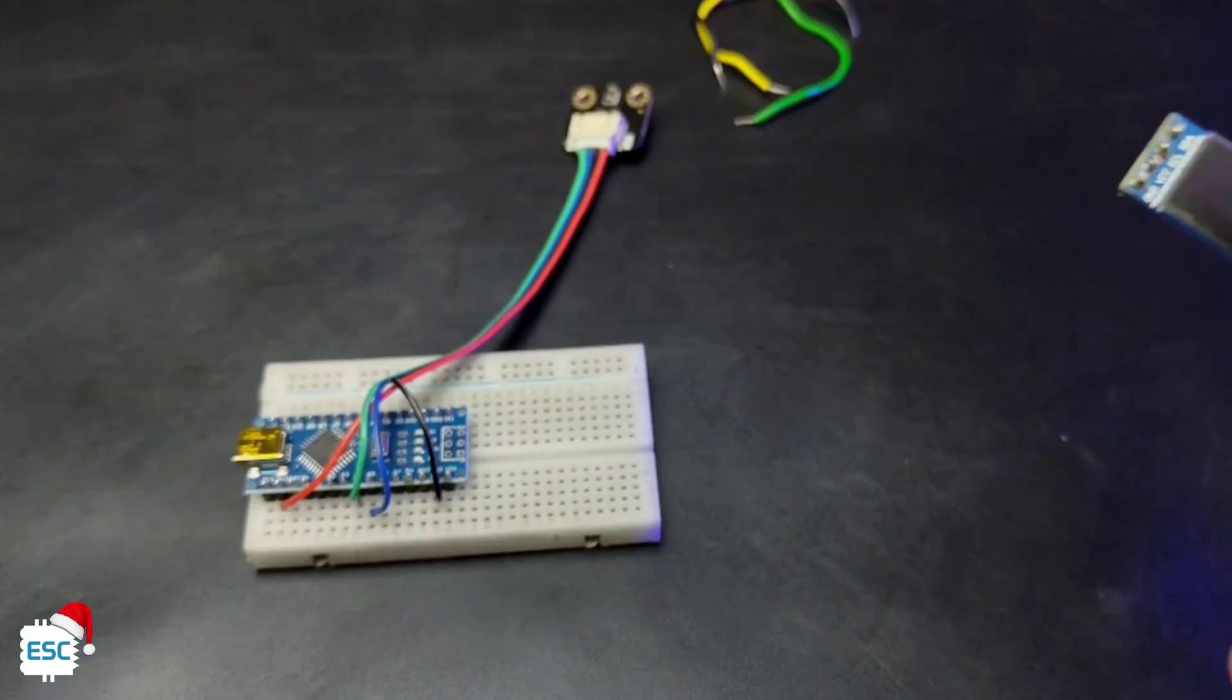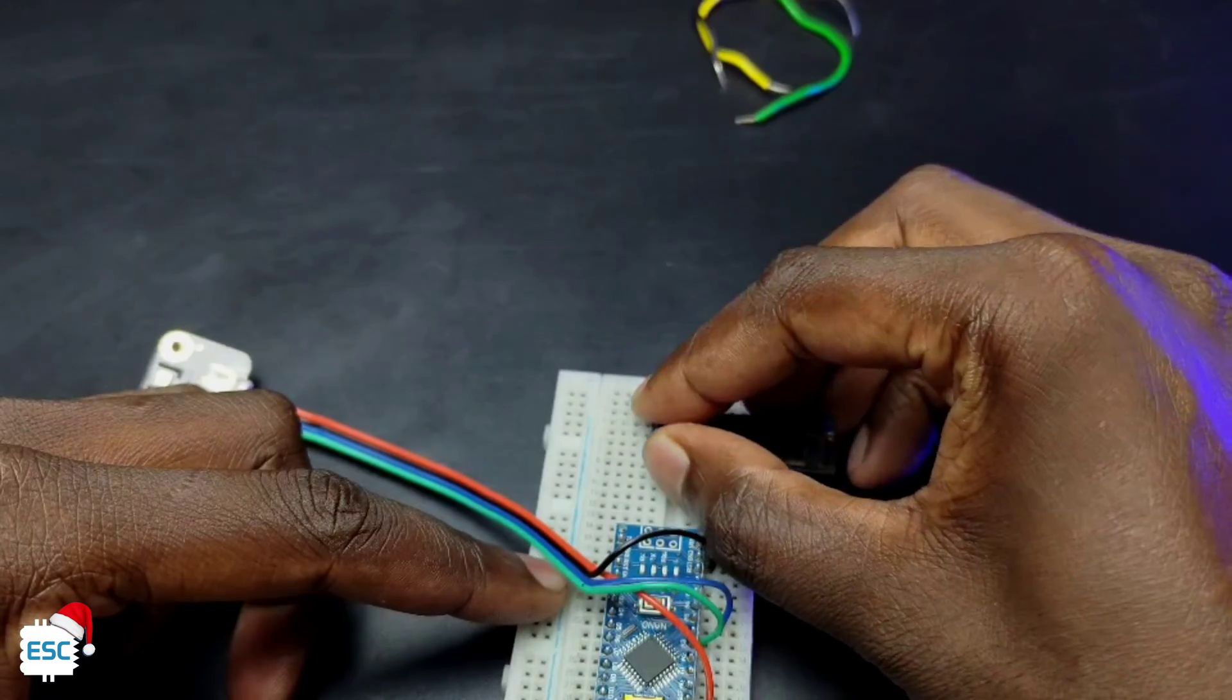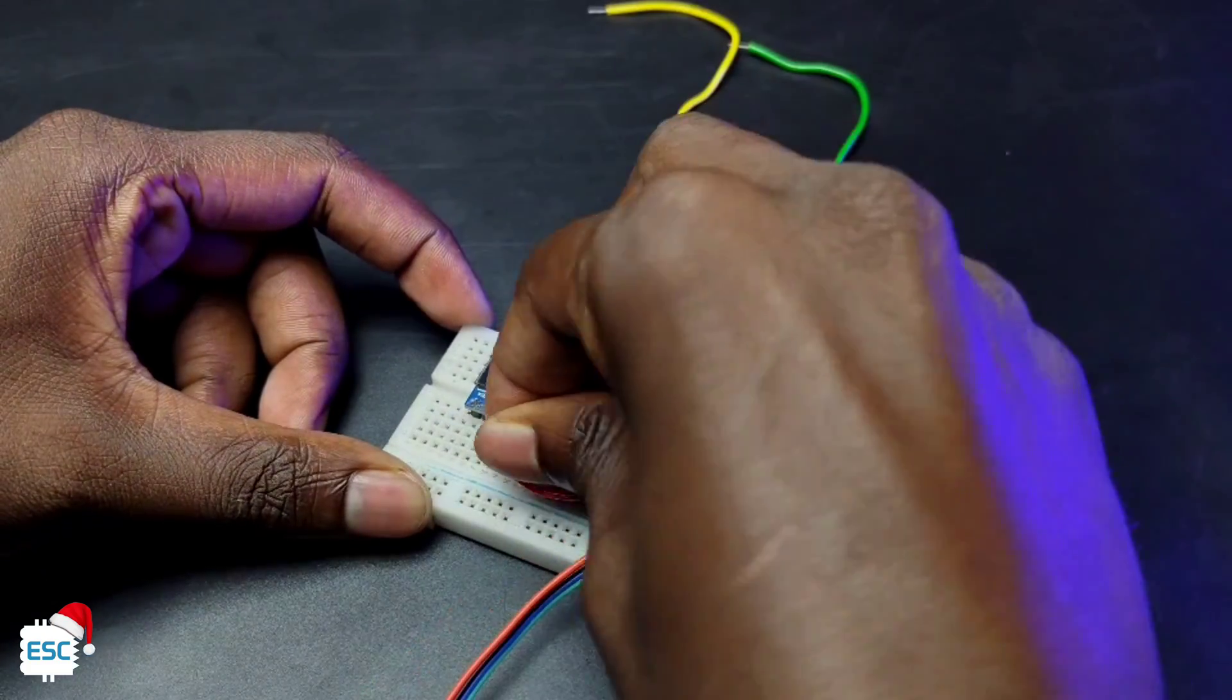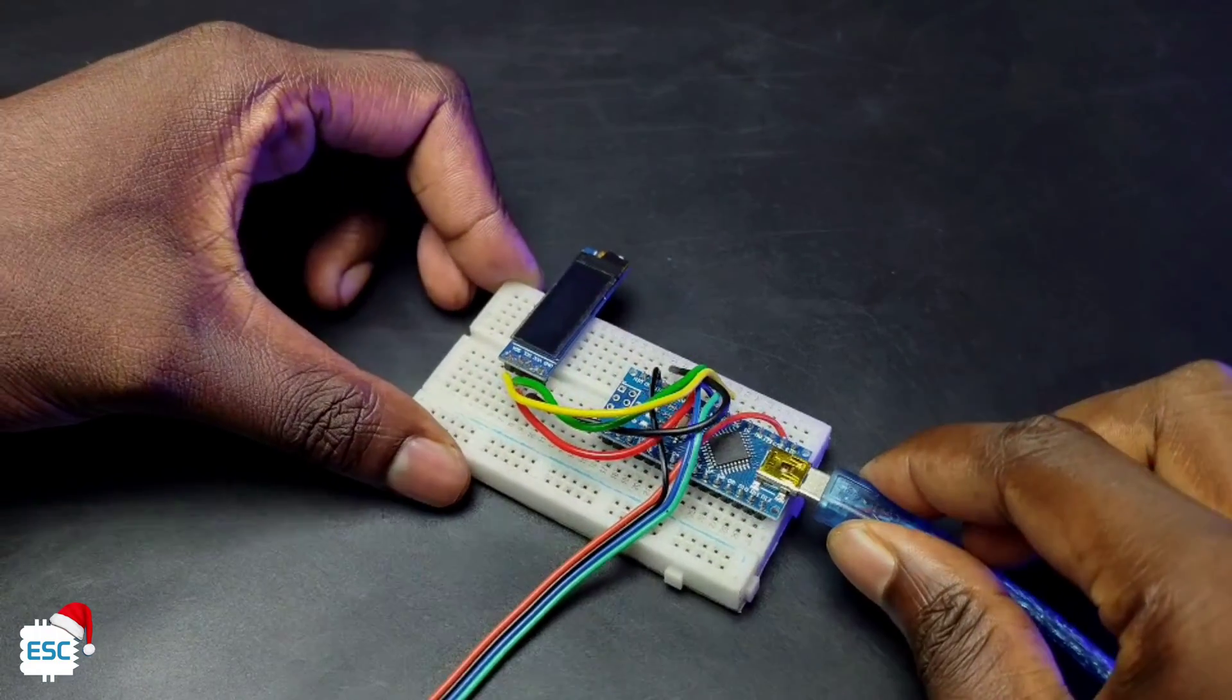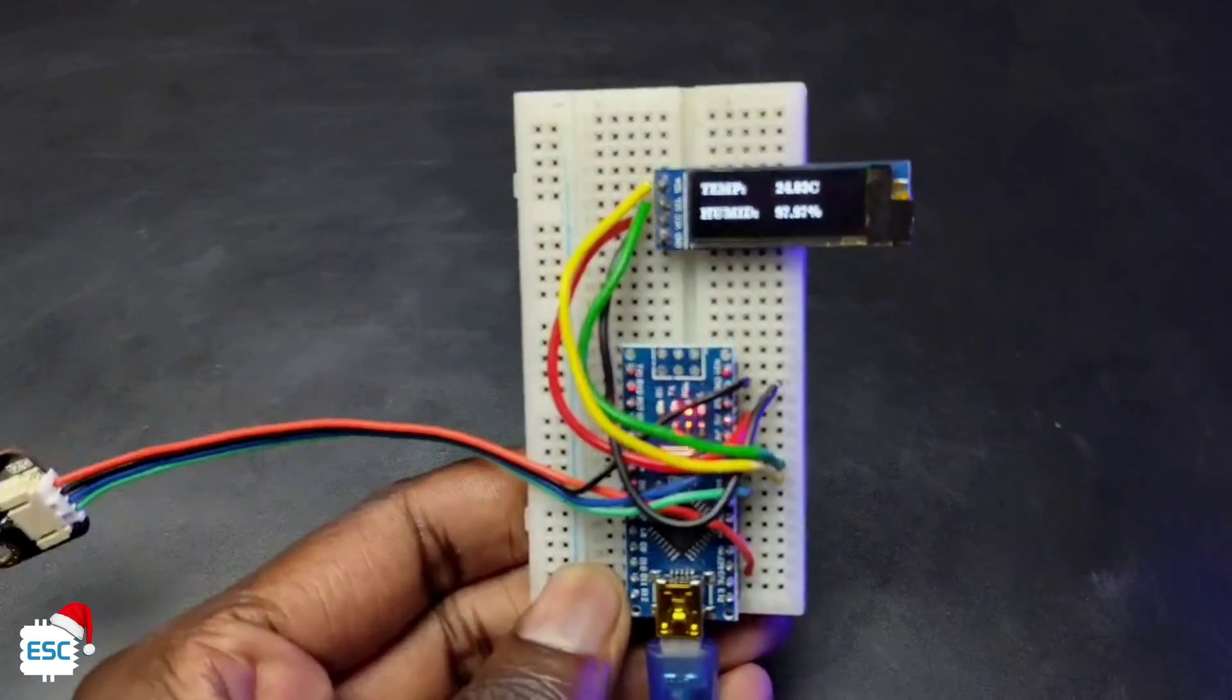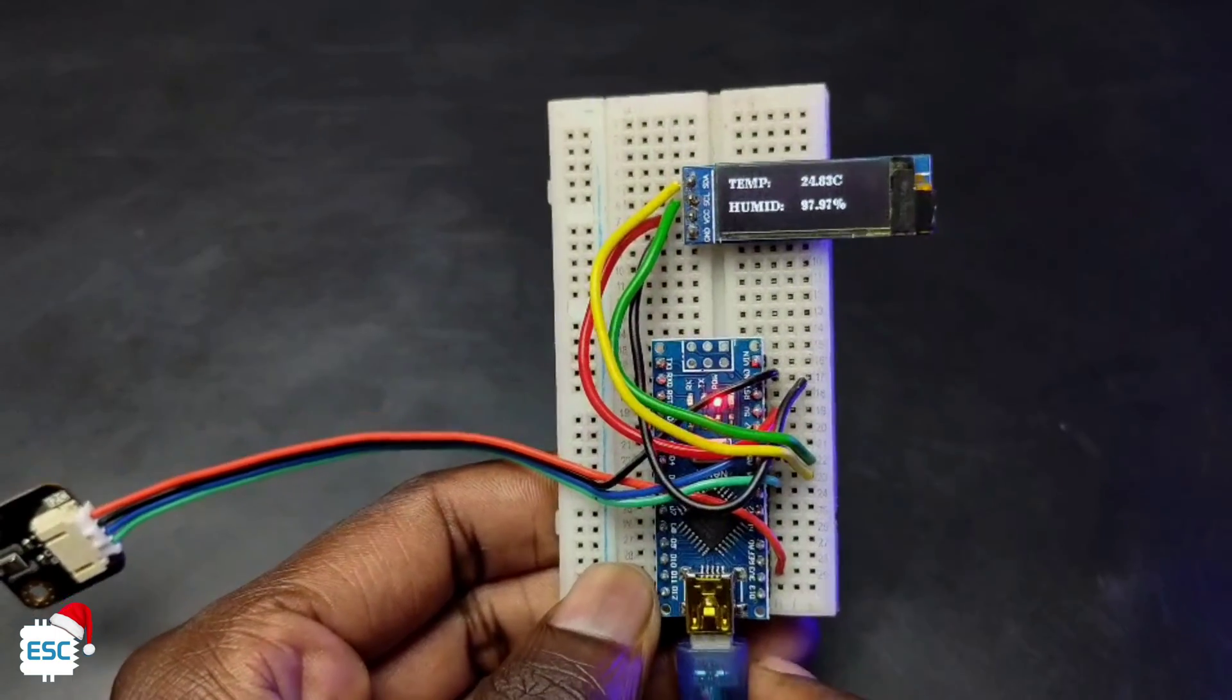Now let's add an OLED to the circuit. You can find the circuit diagram from my site. Now I have uploaded a new code. You can also download the code from my site. So after uploading, you can see the temperature and humidity on OLED.